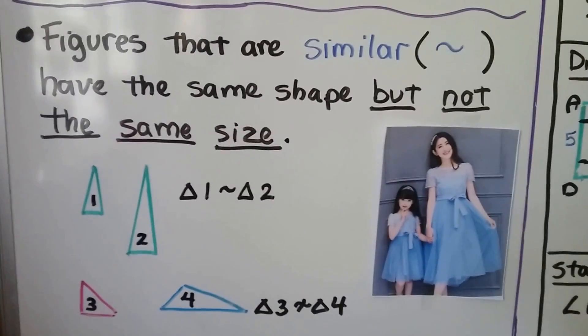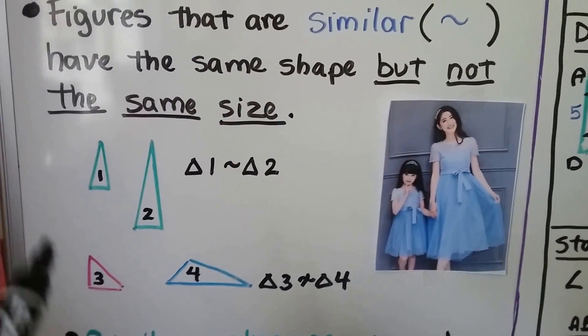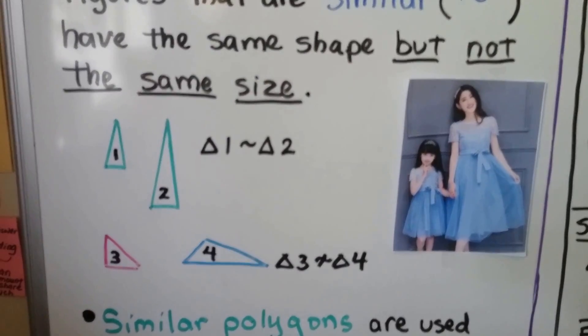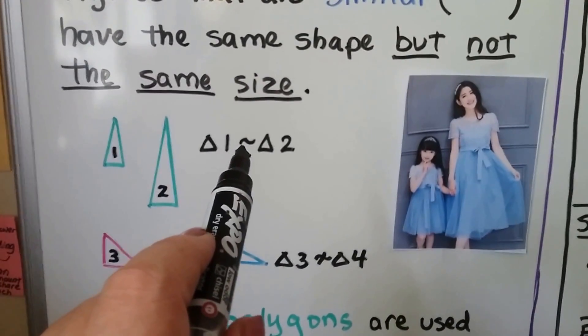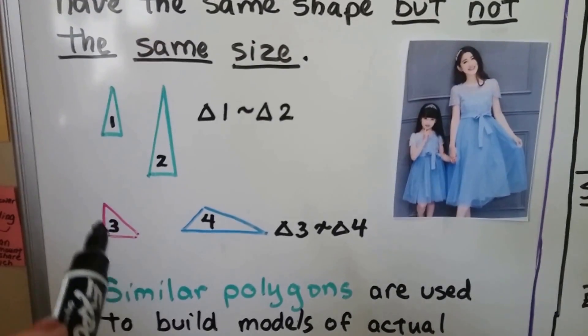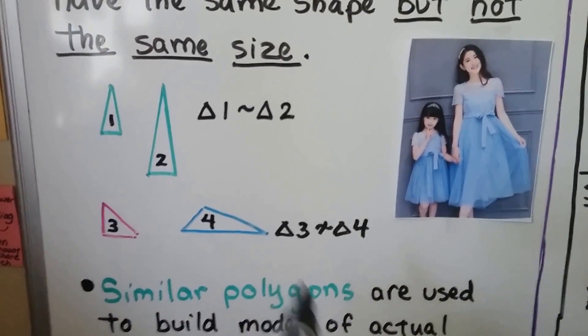Look at their two dresses - they're similar but not the same size. Triangle 1 is similar to Triangle 2. We would write Triangle 1 is similar to Triangle 2. But Triangles 3 and 4 - 3 is not similar to 4. We have our similar symbol with a slash through it.